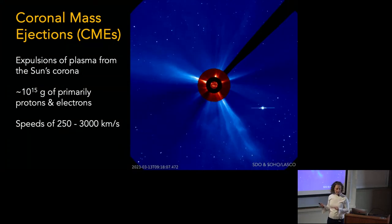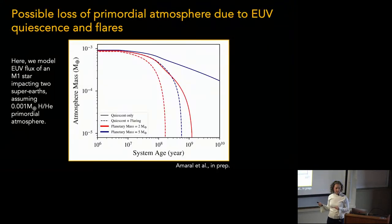Does that model include the change in activity of the star over time, or does it assume constant activity? It includes the flare frequency distribution as a function of time, as best as we have them — which is not perfect. So you assume it's going down? Yes, it's going down with age.